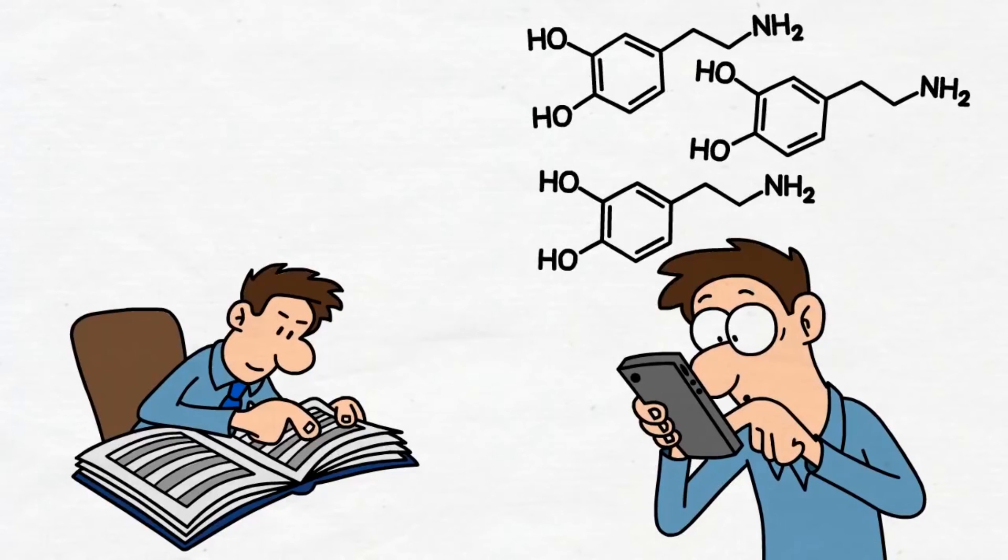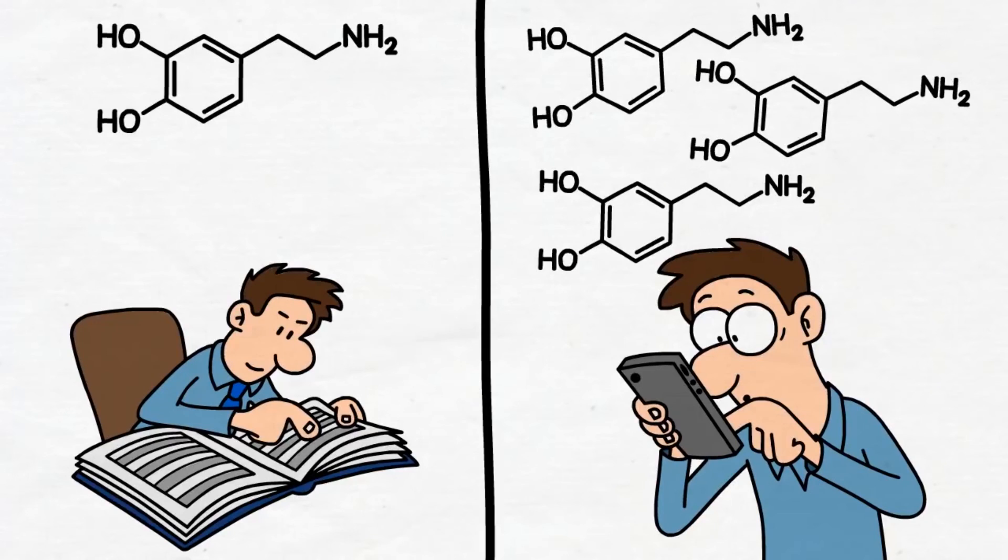So if you have motivation problems, start dopamine detoxing your brain as soon as possible. Separate yourself from the unnaturally high amounts of dopamine, or at least expose yourself to it far less frequently. Only then will normal, everyday, low dopamine activities become exciting again, and you'll be able to do them for longer.